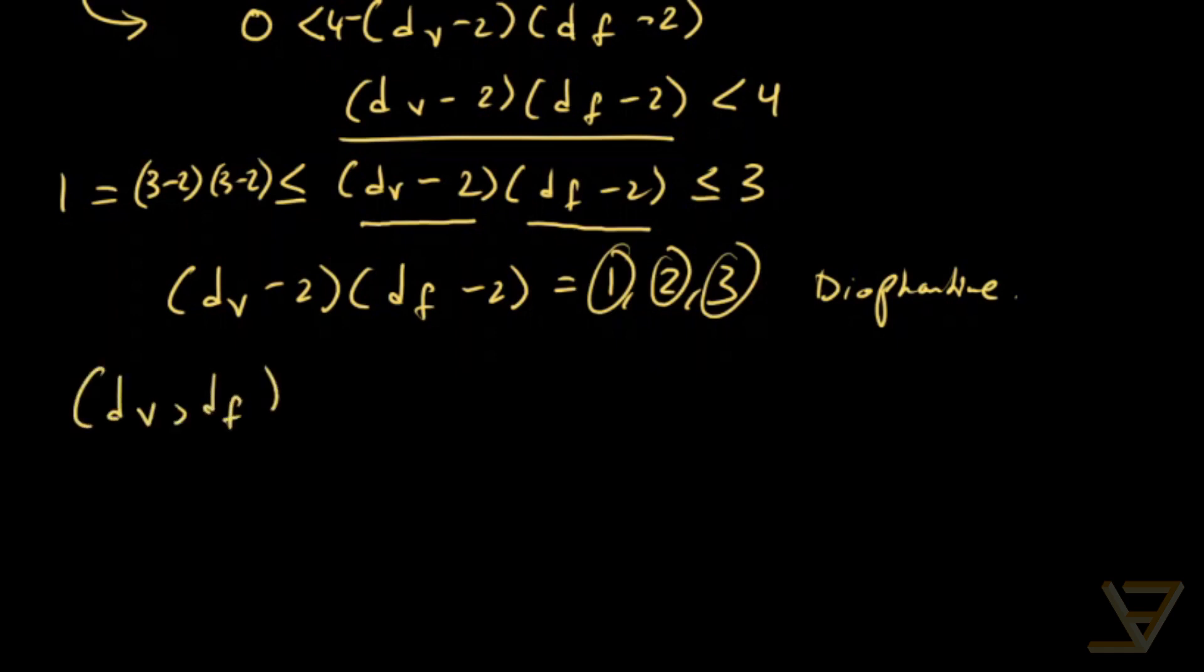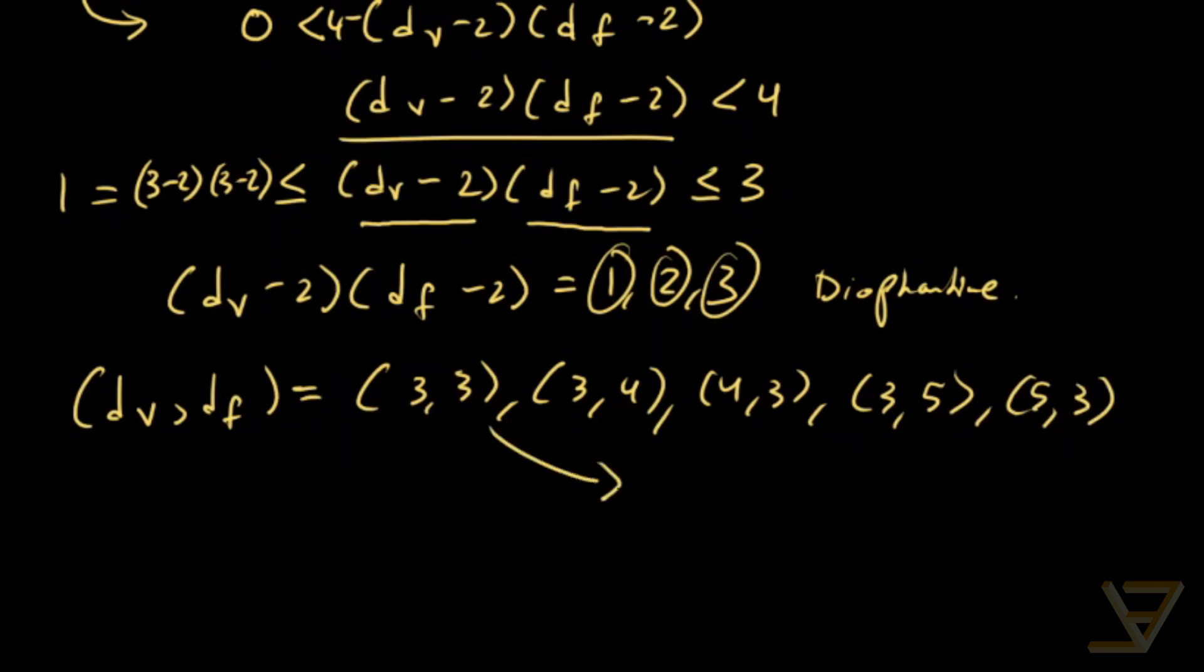But we find that DV, DF is equal to either 3, 3, 3, 4, 4, 3, 3, 5, or 5, 3. And from that you can find V, E, and F as I outlined earlier.